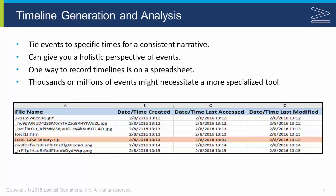One of the main goals of the investigation is to put together a timeline — a sequential narrative describing who did what and when. By putting these steps together, we can often describe what happened on the machine and demonstrate that the person took those actions knowingly, proceeding with full intent to commit whatever act they committed, which is one of our key goals.